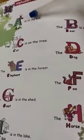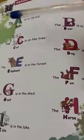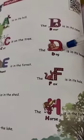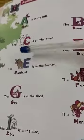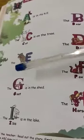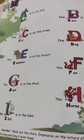So once again, we will read: the ant is in its hill, the bear is in its cave, the cat is on the tree, the dog is in its house, the elephant is in the forest, the fox is in its hole, the goat is in the shed, the horse is in the farm, the ibis is in the lake.